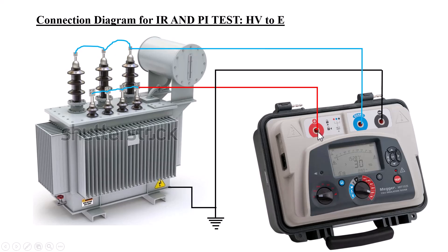For low voltage to earth, the positive lead is connected to the low voltage winding and the negative is connected to earth. Please note there is a text mistake in this slide. The guard in this case is connected to the high voltage winding — the other part — since this is the LV-to-earth configuration. This completes all three connection configurations.